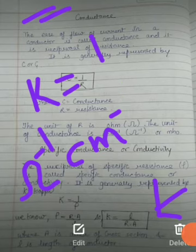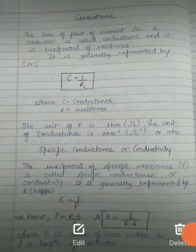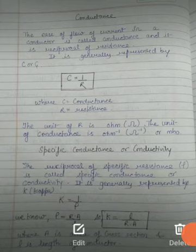So this is all about specific conductance or conductivity. To summarize: kappa = 1/rho, and substituting the value of rho, we get kappa = l/(R·a), where l/a is the cell constant. Therefore, specific conductance or conductivity equals conductance times cell constant. Thank you, class.